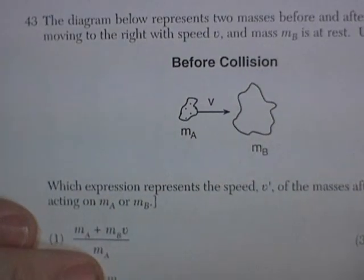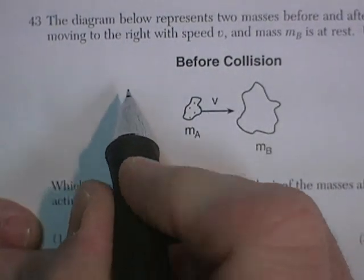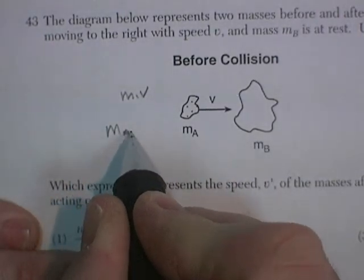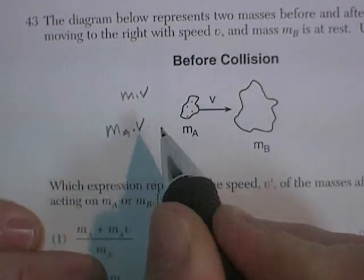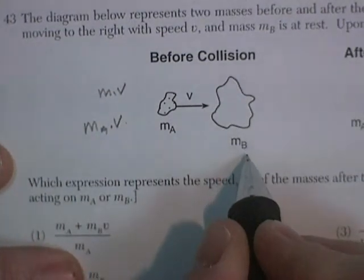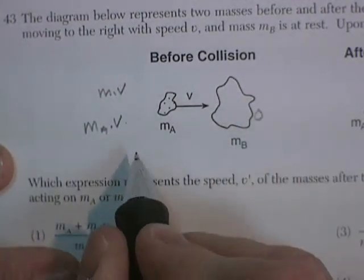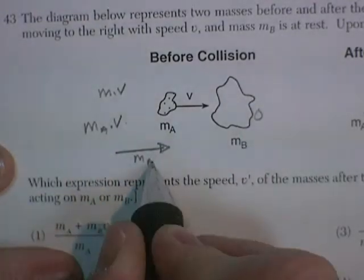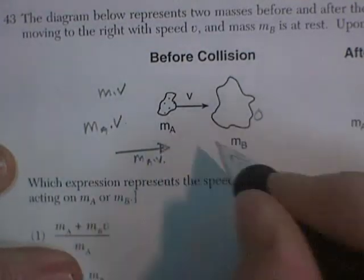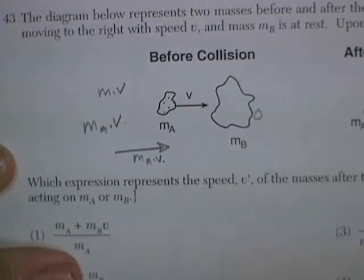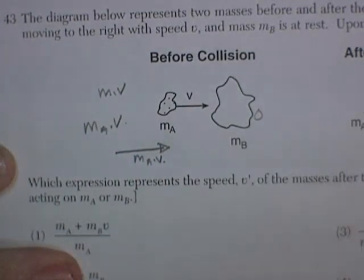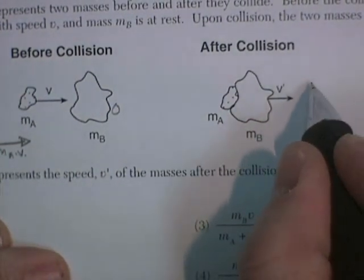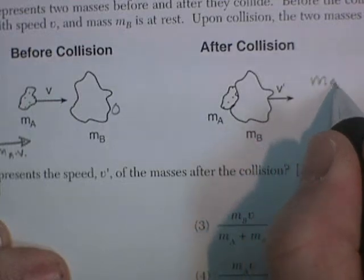Let's look at this. Mass A has momentum — momentum is mass times velocity — so we'll call that mass A times velocity. Mass B has no momentum, so that would be zero. Before the collision, the total momentum will be mass A times velocity. After the collision, it will have to be the same momentum.